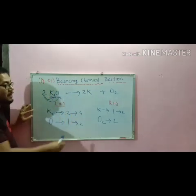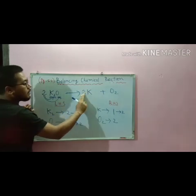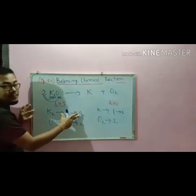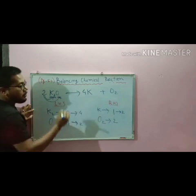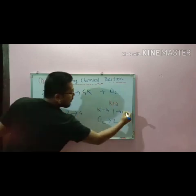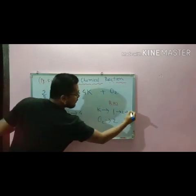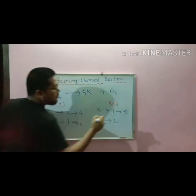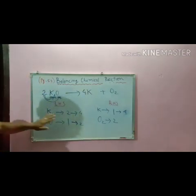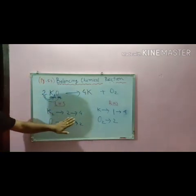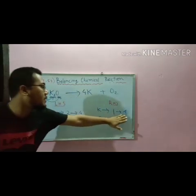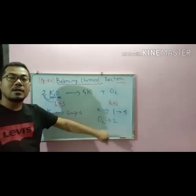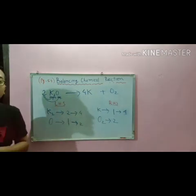That means we have to change the LHS potassium coefficient from two to four. Since RHS has four, we change LHS to four. So our chemical equation is now balanced — potassium four equals potassium four, oxygen two equals oxygen two. Our equation is balanced.